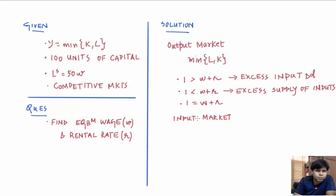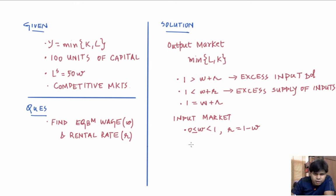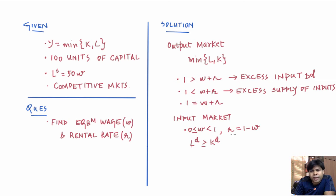We have established that if there is a competitive equilibrium, it must be the case that w plus r equals one. We divide this problem into two cases. Case one: w is strictly between zero and one, so r equals one minus w. Case two: w equals one and r equals zero.